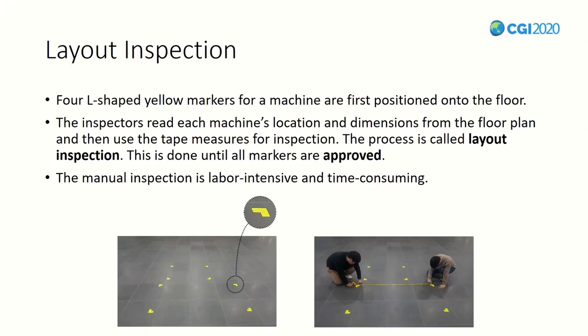There are two reasons inspection is necessary. First, the field workers might have placed some markers incorrectly when first placed. Second, there are a lot of workers in the fab and this can damage or cause correctly placed markers to disappear. Therefore, inspection is always done in industrial fields. This inspection is done by field workers in pairs, referring to floor plans with tape measure equipment. We define this overall process as layout inspection.